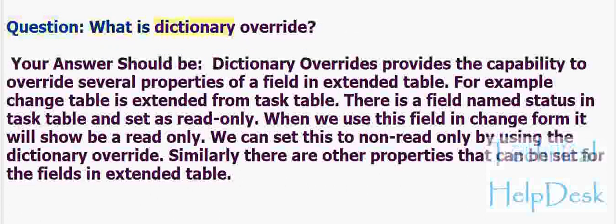Question: What is dictionary override? Answer: Dictionary overrides provide the capability to override several properties of a field in an extended table. For example, the change table is extended from the task table. If a field named 'status' in the task table is set as read-only, when used in the change form it will show as read-only. We can set this to non-read-only by using dictionary override. Similarly, other properties can be set for fields in the extended table.